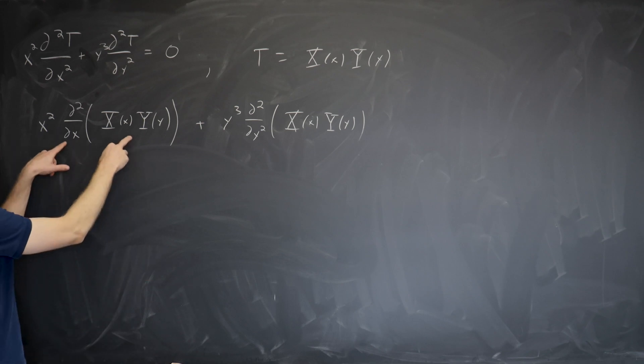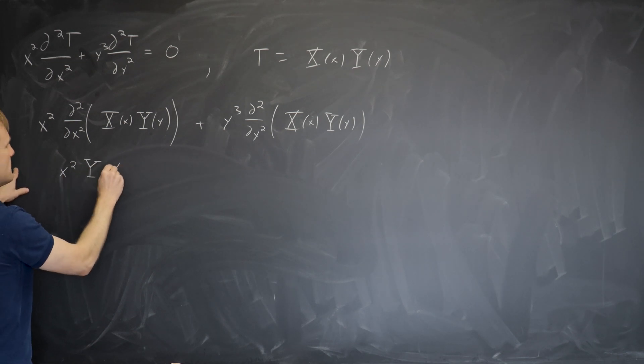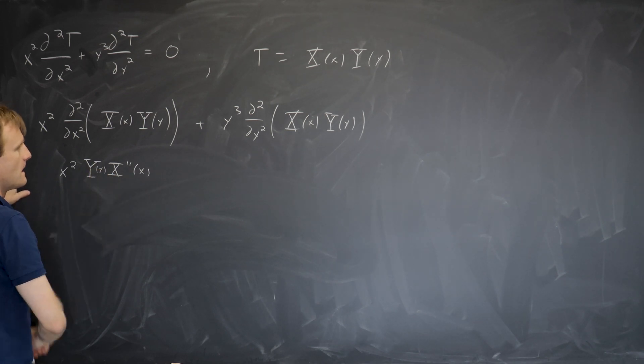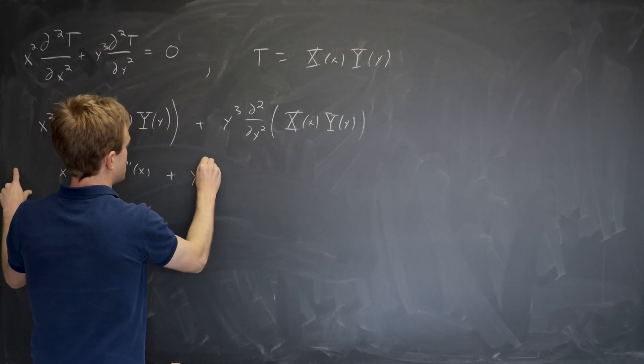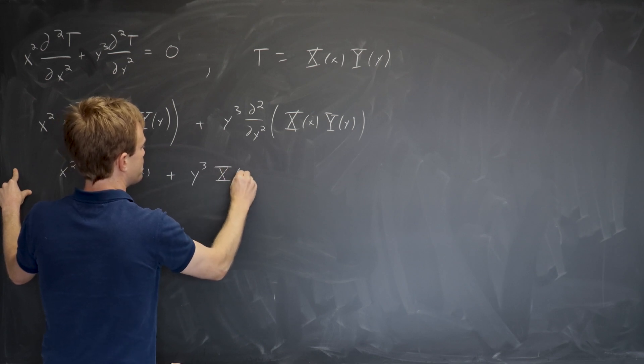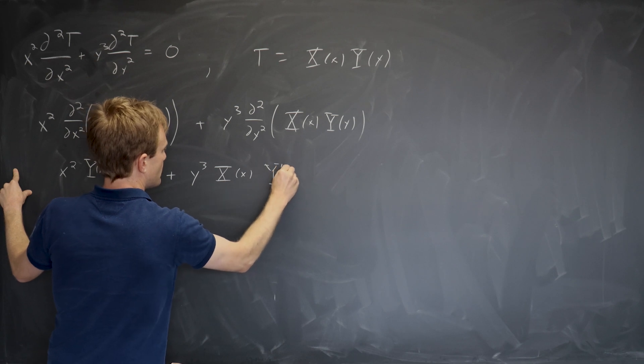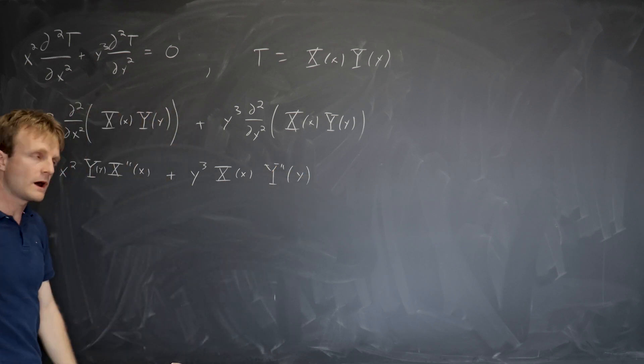And we play the same game. We notice that we can bring the Y out. So we get x squared capital Y times capital X double prime of x and the same thing over here, y cubed, bring out the X and we get Y double prime of y.